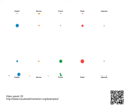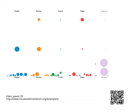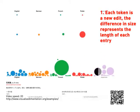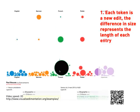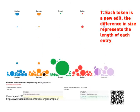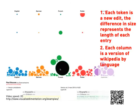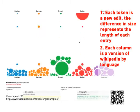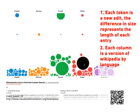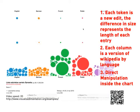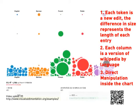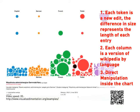Wikipedia Flow monitors edits on different language versions of Wikipedia. Each token is a new edit, and the difference in size represents the length of each edit. Each column is a version of Wikipedia by language, and direct manipulation is enabled inside the chart.